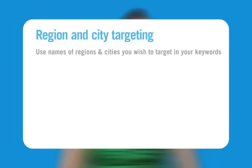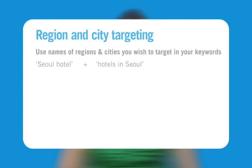Include the names of regions and cities you wish to target in your keywords. For example, Seoul hotel and hotels in Seoul. Then when a user in South Korea searches for your keyword your ad will appear.